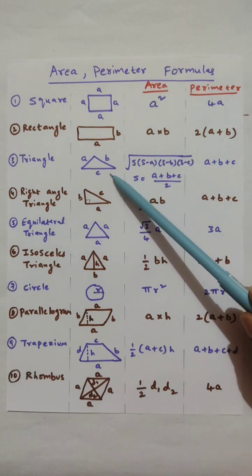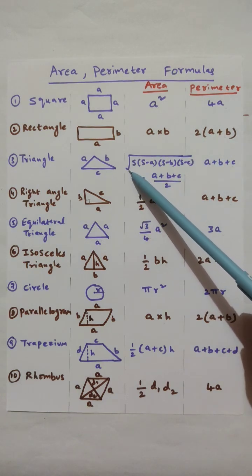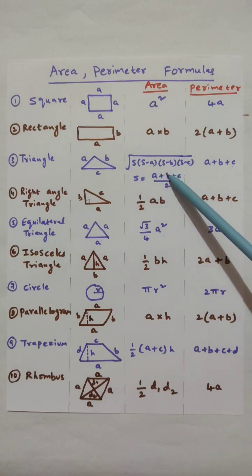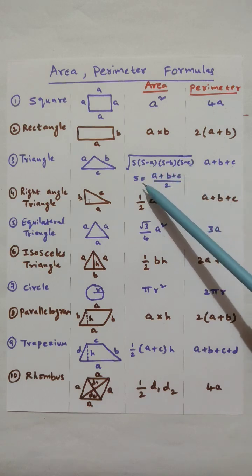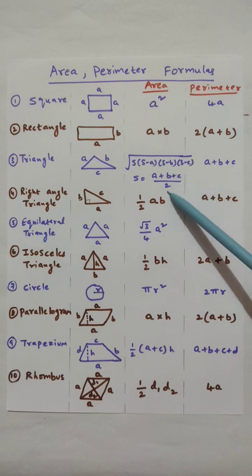Triangle ABC. Here area is under root of S into S minus A into S minus B into S minus C, where S is the semi-perimeter, that is A plus B plus C by 2. Perimeter is A plus B plus C.